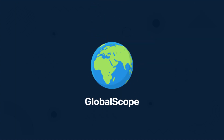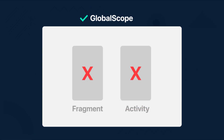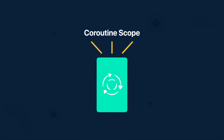You might have already heard about global scope. Global scope is used to launch top-level coroutines, and it lives as long as the whole application lives. This means if we use global scope in a fragment or activity, it will not be cancelled even if the fragment or activity is destroyed — which can lead to memory leaks. Each coroutine scope should be tied to a specific application component lifecycle.